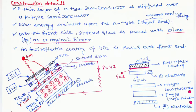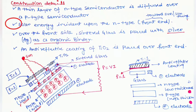A minimum energy is required for electrons to jump to a different state. Over the front side, sintered glass is placed with silver as an organic binder. An anti-reflective coating of TiO2 is placed over the front end. N-type semiconductor is placed on the sun-facing side so that solar energy is incident upon it. I think the basic construction is now well understood.